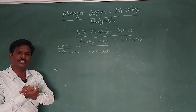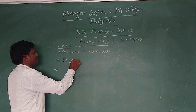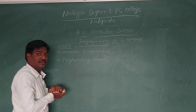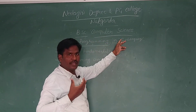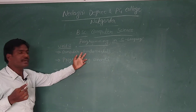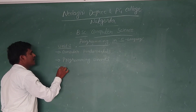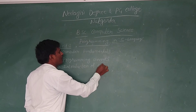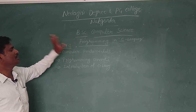In Programming in C language, we will study five units. In the first unit, we will study computer fundamentals. Although computer fundamentals is not technically part of C language, since we are beginners, we first study the computer, then some programming concepts, and then an introduction to C language. These are the three concepts in the first unit.